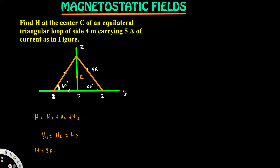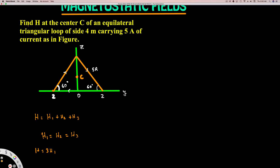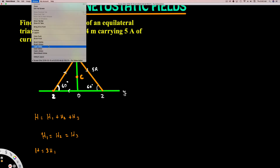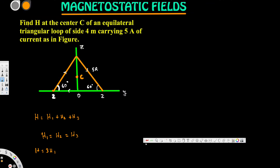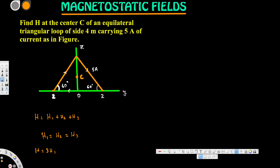Now let's redraw the triangle. We're interested in finding H at the center C. I'm going to draw an inner triangle to obtain some angles, and this center point is exactly at the center of the equilateral triangle.